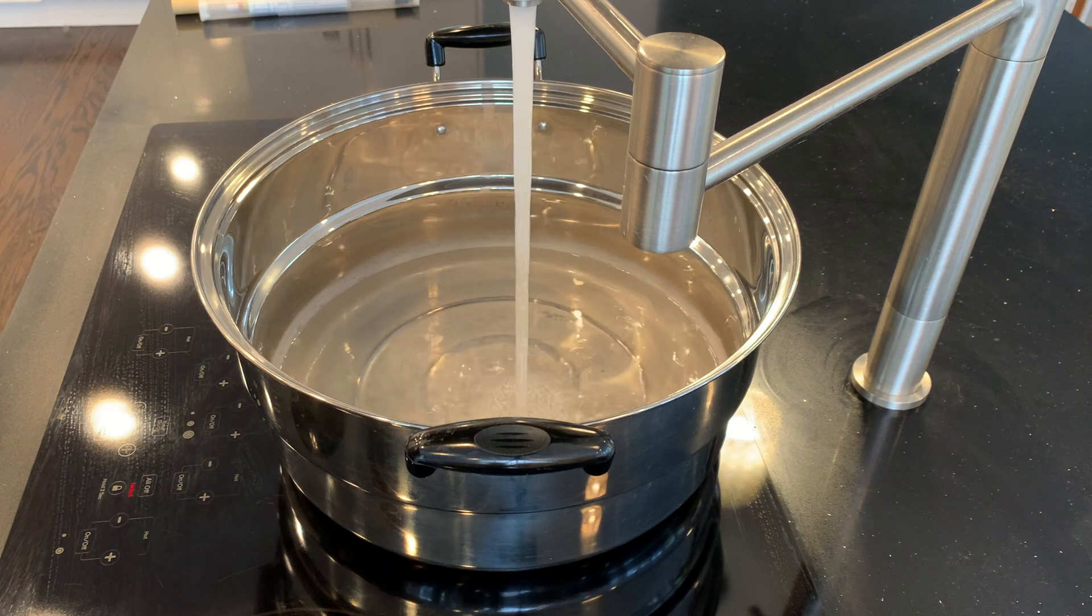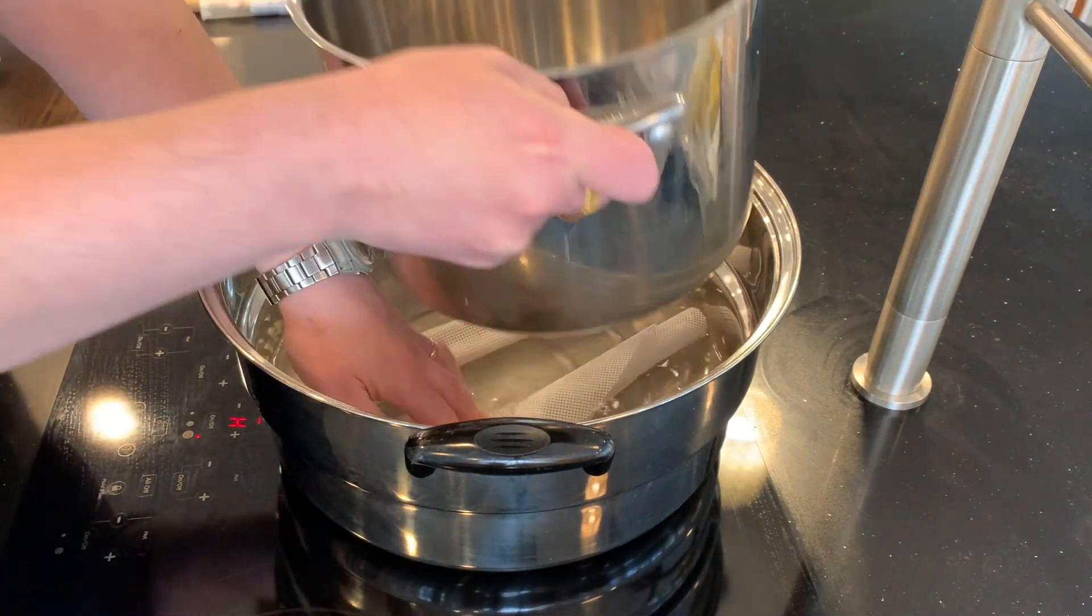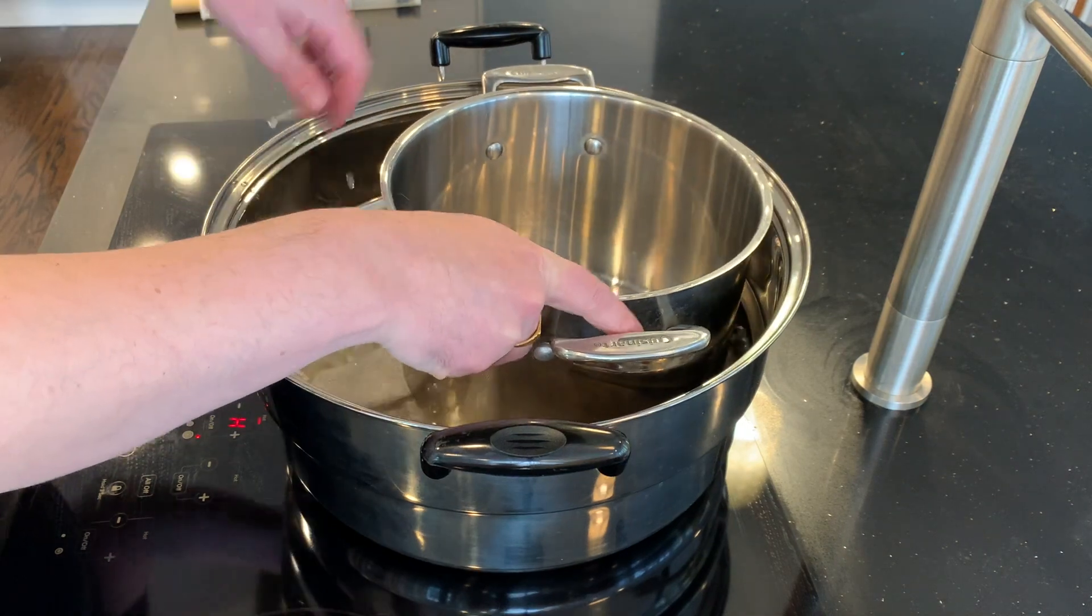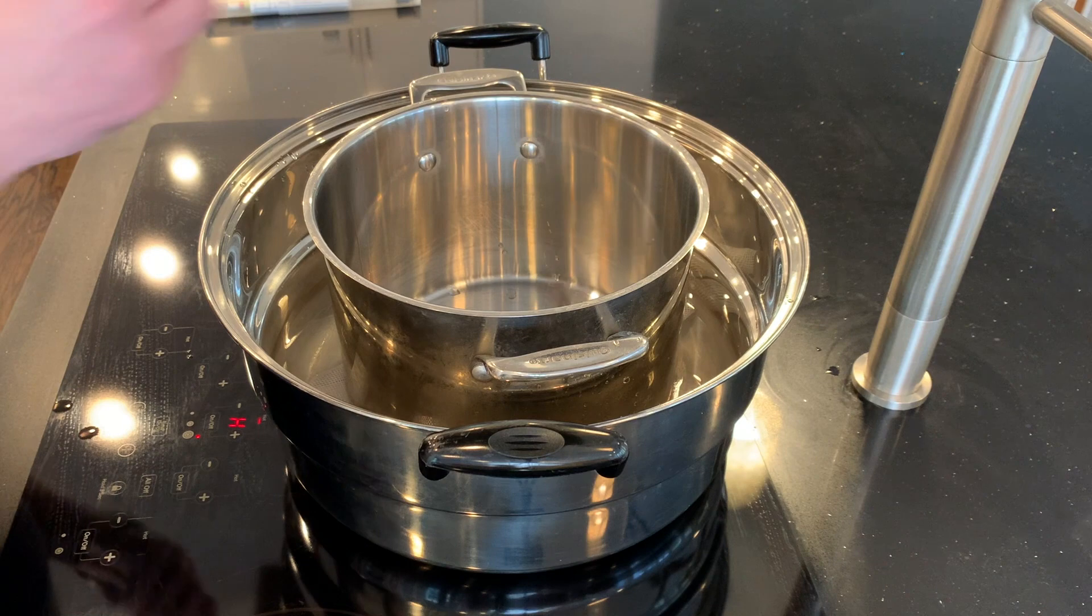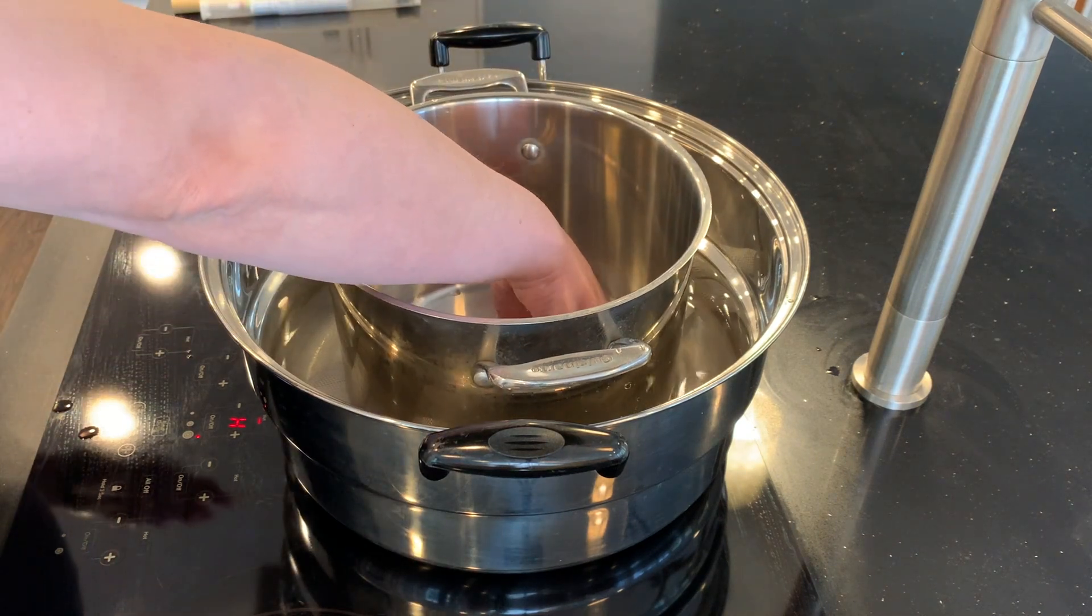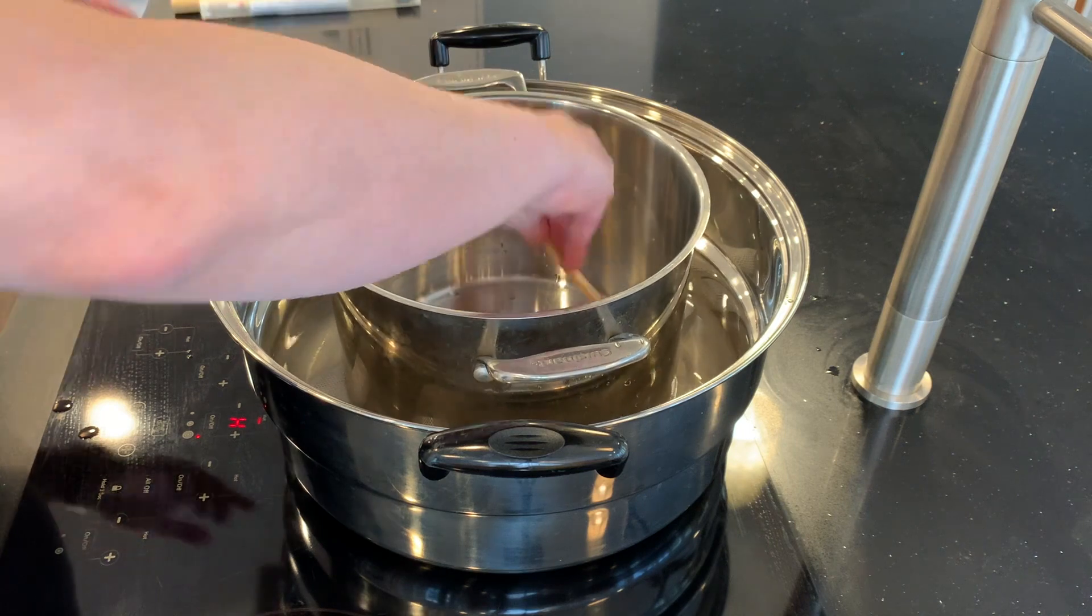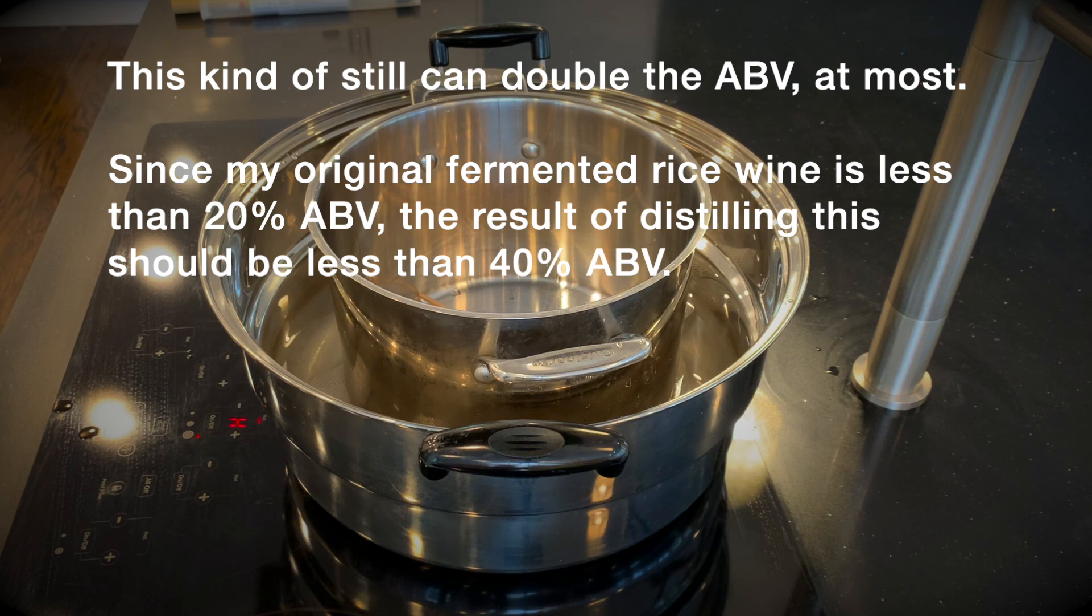So I'll build a Mongol style still in my kitchen from stainless steel pots and bowls. This time I tried to be more methodical. I set the heat lower and I collected the distillate every 20 minutes. Now this simple kind of still can be expected to maybe double the alcohol percentage, but not much more than that. And since the fermented rice wine is going to be less than 20% alcohol, the distillate should be less than 40% alcohol.